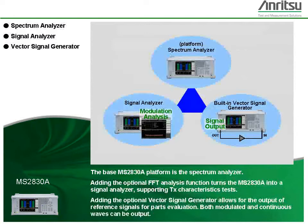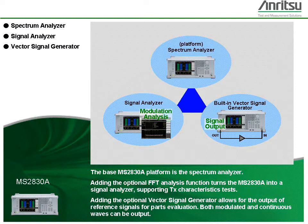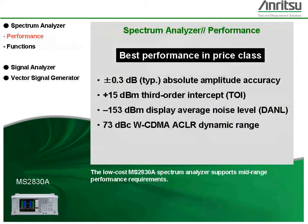Adding the optional FFT analysis function turns the MS2830A into a signal analyzer supporting transmitter characteristics tests. Adding the optional vector signal generator allows for the output of reference signals for parse evaluation. Both modulated and continuous waves can be output. The low-cost MS2830A spectrum analyzer supports mid-range performance requirements.